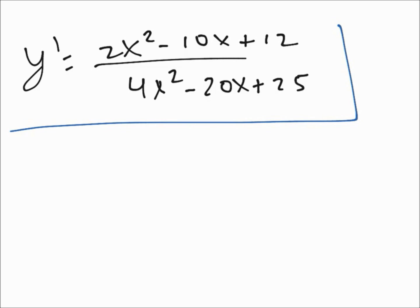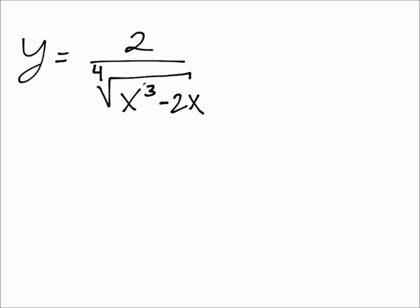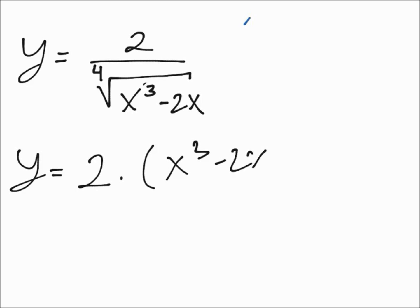For the next problem, we're going to use the quotient rule and the power function. Actually, we don't even need to use the quotient rule — we can just use the power rule. We can rewrite this as 2 times the quantity x cubed minus 2x, raised to the power of negative one-fourth. If the denominator were 2x, we would have had to use the quotient rule, but it's just a constant.